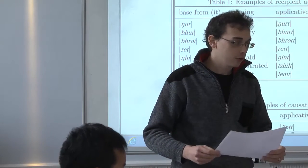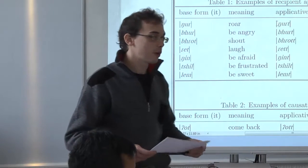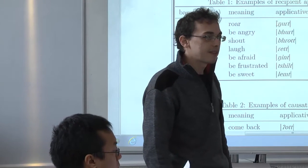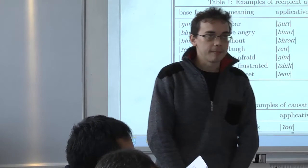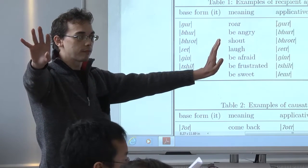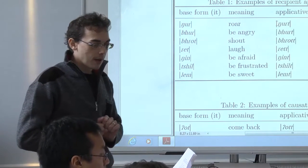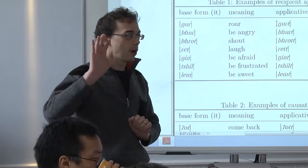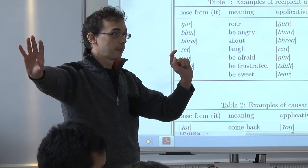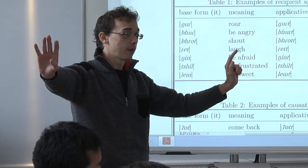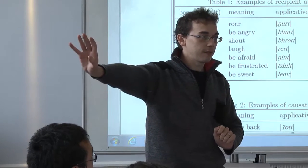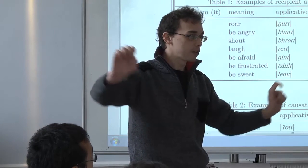And you also have, Downer did not use this word because it wasn't invented when he wrote his article, antipassive. What is antipassive? Antipassive is to derive an intransitive verb from a transitive one. Okay? But, unlike the passive where the only argument of the intransitive verb corresponds to the patient of the transitive verb, in the case of antipassive, the only argument of the intransitive verb corresponds to the subject.